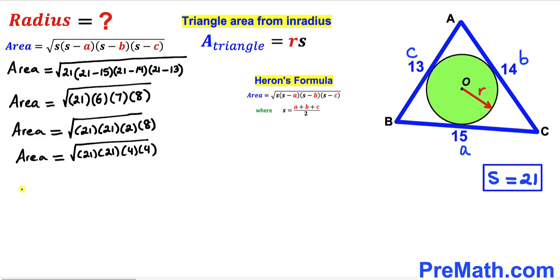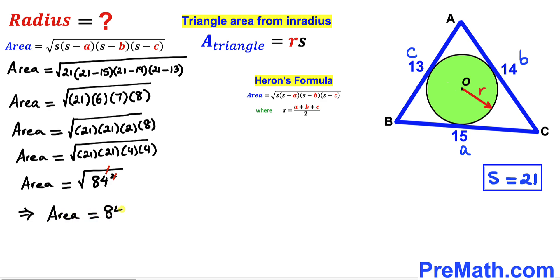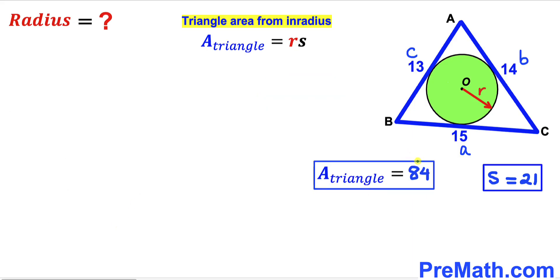Therefore the area of this triangle equals √(84²), and since the square and square root undo each other, the area of triangle ABC turns out to be 84 square units.